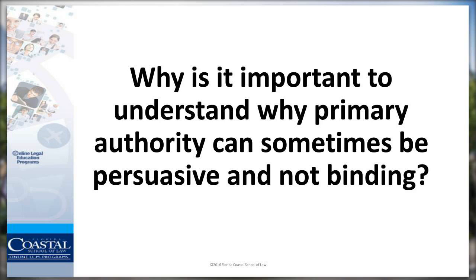We should never start with secondary authority if we have mandatory binding authority available. While primary sources articulate the law, secondary sources are available to analyze the law. For example, a Fourth Circuit case is a primary source, but an article analyzing that case would be a secondary source. You can cite to secondary sources and persuasive authority in legal documents, but you've got to make sure you know when it's going to be appropriate.